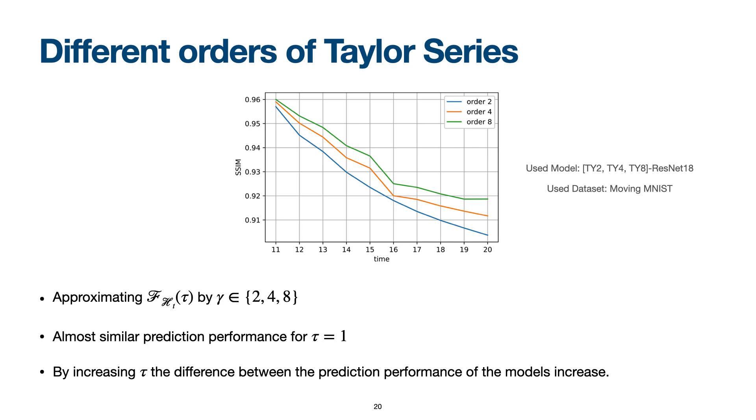Comparing different orders of the Taylor series. The figure can clearly show the effect of increasing gamma. And by moving toward the time axis, the effect intensifies.